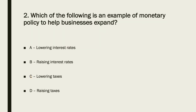Let's move on to question two. Fiscal policy is about taxes, so it's not C, it's not D. Monetary policy is about interest rates, so it's clearly one of A or B. If you're looking to expand a business, you want to make it cheaper to borrow money. So A is the answer — lowering interest rates.